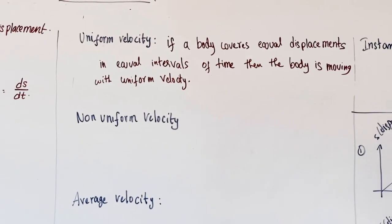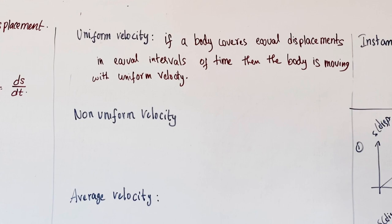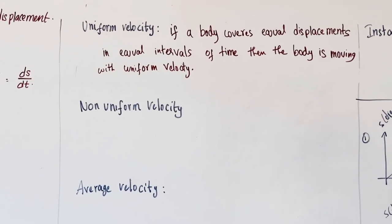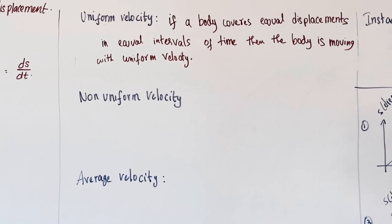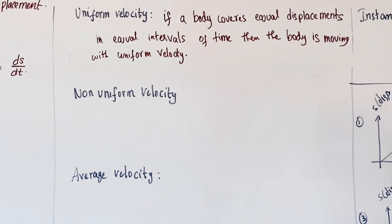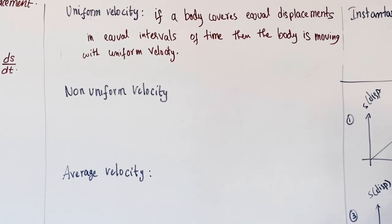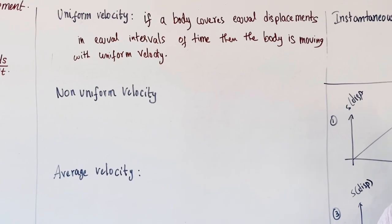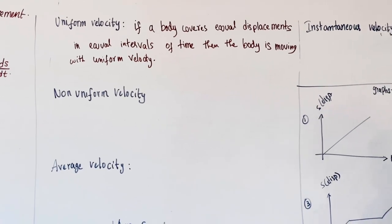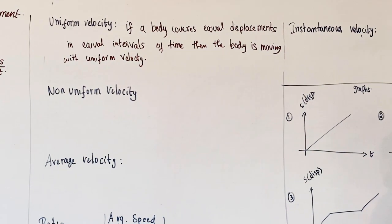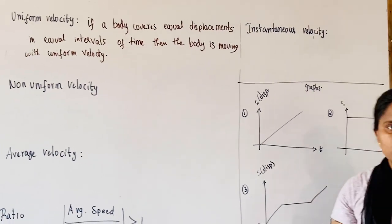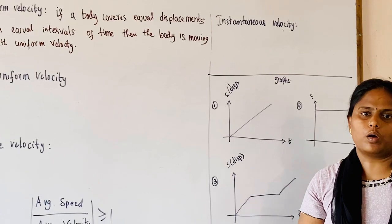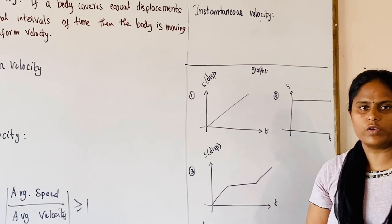Now, non-uniform velocity. Similar to non-uniform speed, if a body covers unequal displacements in equal intervals of time, then we can say that the body is moving with non-uniform velocity.